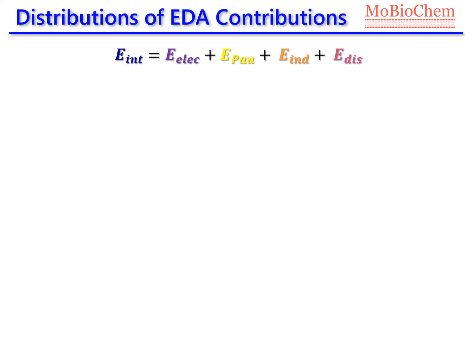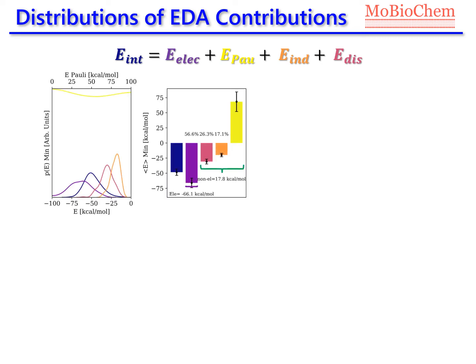Now for the main results. Looking at the energy term distributions for geometries from the minimum region, the electrostatic energy is the predominant attractive contribution — consistent with the classical force field result. However, there is a surprising difference: the non-electrostatic part is positive in the QM case, which differs from the classical result.